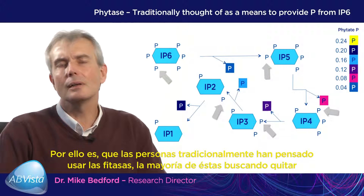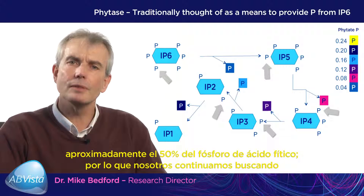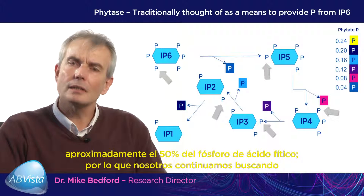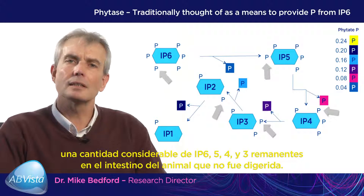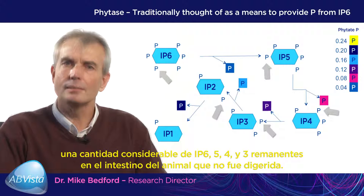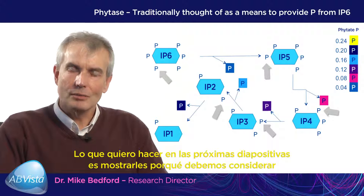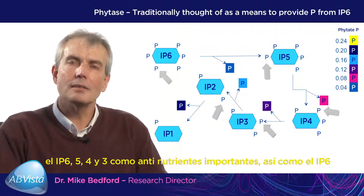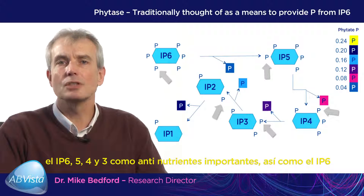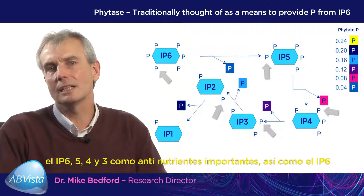Most people are looking at removing approximately 50% of the phosphorus from phytic acid. So we are still looking at a considerable amount of IP6, IP5, IP4, and IP3 left in the gut of the animal undigested. What I want to show you on the next few visuals is why we've got to consider IP5, IP4, IP3, and IP2 as being significant anti-nutrients, just as much as IP6.